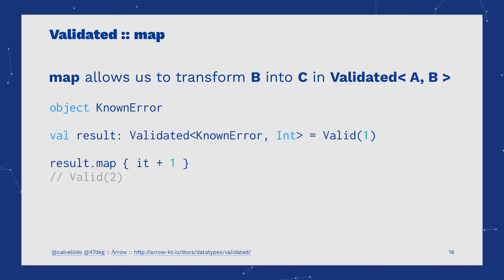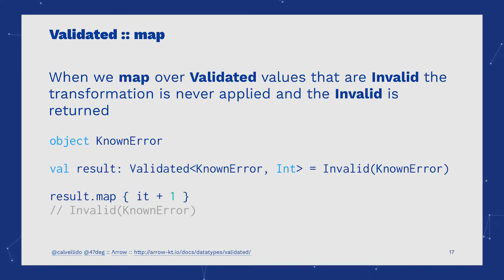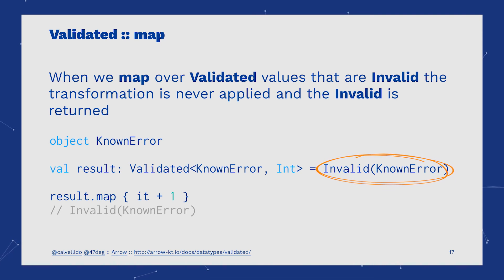Map allows us to transform the values inside of Validated. It operates only on the Valid case, and that's why we said that Validated is also right-biased. If we were mapping and there was an Invalid, the transformation is never applied and the Invalid is left untouched.